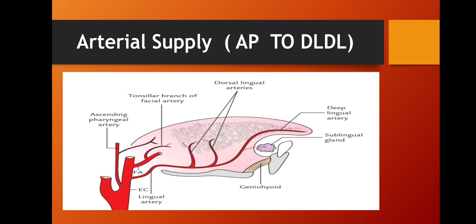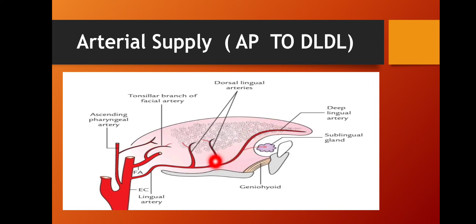Here we are going to discuss the arterial supply of the tongue. See in this picture — this one is the external carotid artery. From the external carotid artery, one artery is coming: that is the lingual artery. This lingual artery gives rise to 3 branches.